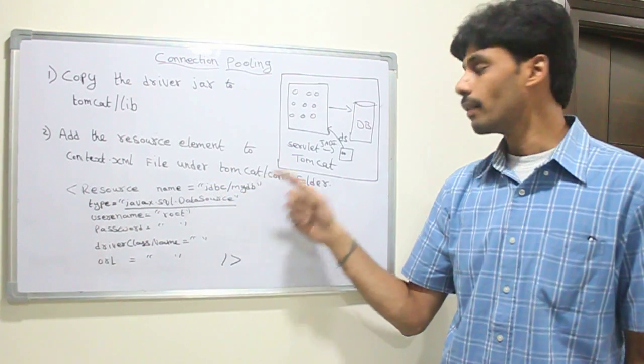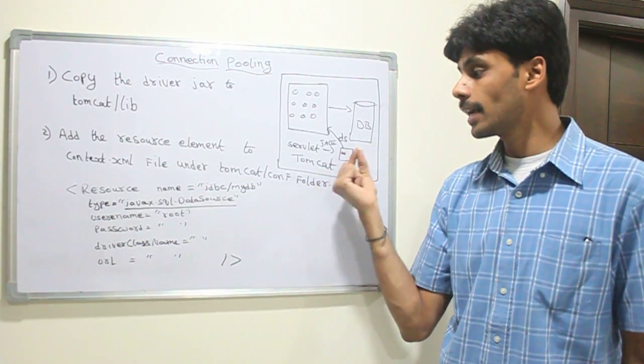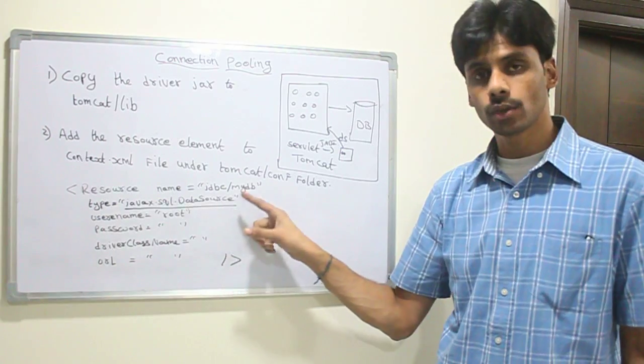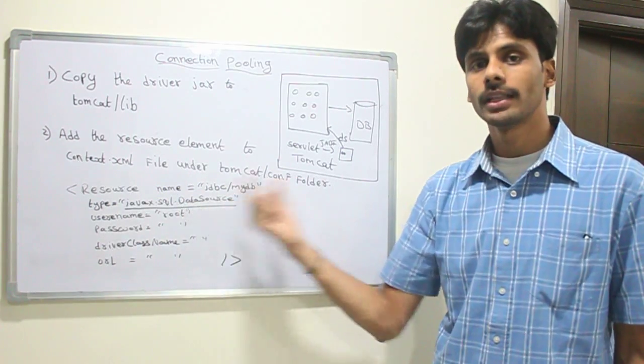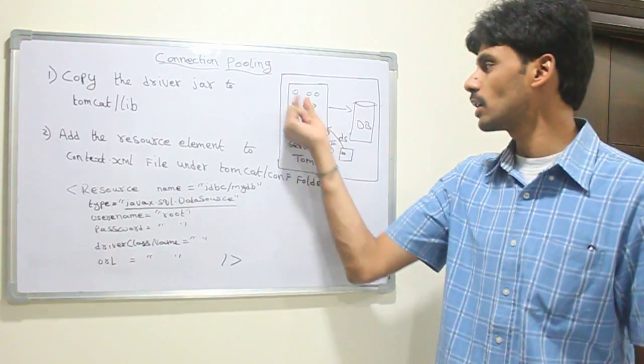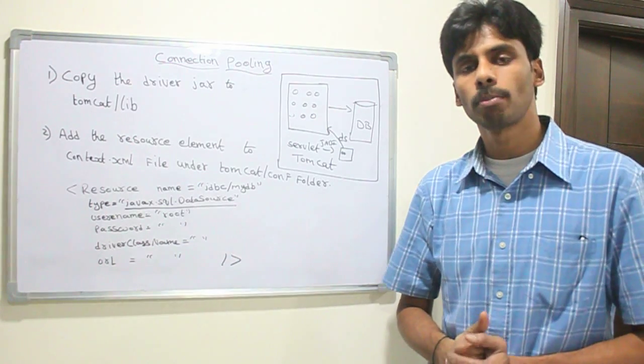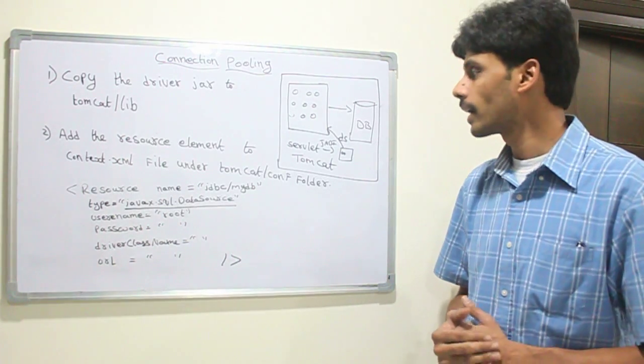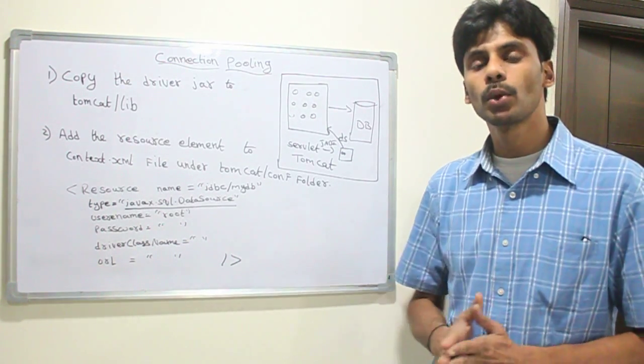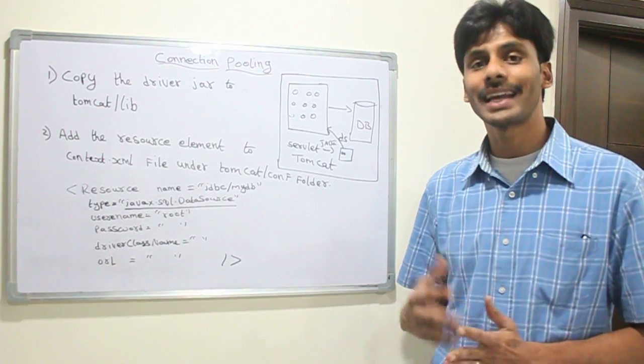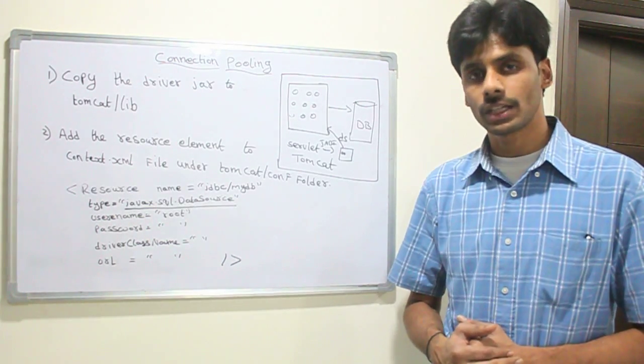If you do this name, you will get that JNDI value for JNDI data source, the object of the data source. Then you can say DS.getConnection. It will get you one connection from the pool. Data source is a factory of connections. So this way we improve the performance in our application by reusing the existing connections.